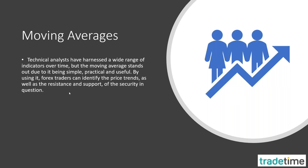Because price moves up and down continuously, and sometimes it gets so volatile and so irregular that you can't see a pattern developing. There's lots of noise with the highs and the lows and the opens and the closes. Moving averages can help you smooth this out so you can see more precisely what is happening. Technical analysts have harnessed a wide range of indicators over time, but the moving average stands out due to being very simple, practical and useful. Forex traders can identify price trends as well as support and resistance of a security in question.